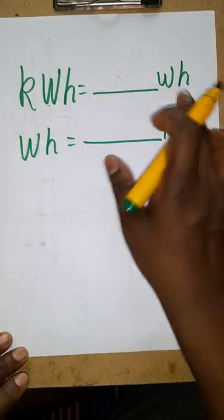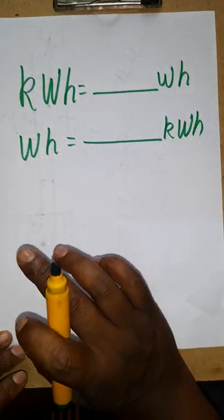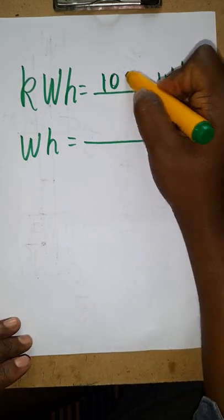Hello students! Today we are going to learn how to convert from kilowatt to watt, watt to kilowatt. One kilowatt is 1000 watts. It's a very simple conversion.